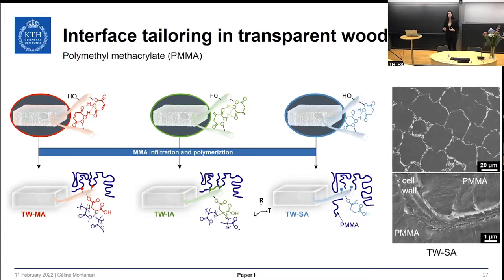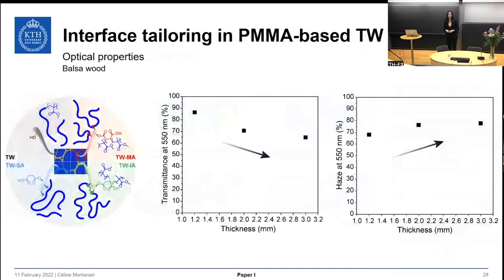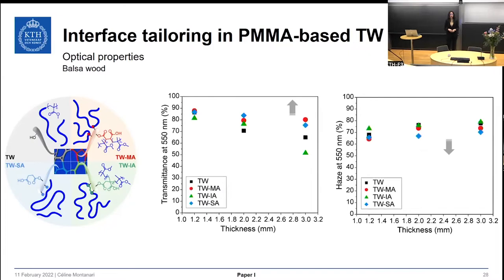To assess the effects of interface tailoring on the optical properties of transparent wood, we prepared materials at different thicknesses ranging from 1 mm to 3 mm. In the transparent wood reference, increasing thickness decreases transmittance due to greater light attenuation, while haze increases due to greater scattering. After functionalization, the transmittance was increased and the haze was simultaneously decreased. The effects were strongest for maleic anhydride and succinic anhydride functionalization, so interface tailoring provides an improved interface resulting in improved transmittance and reduced haze.